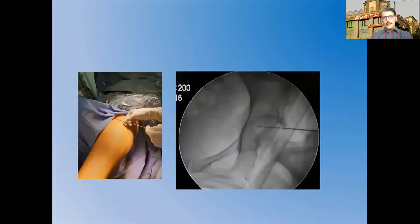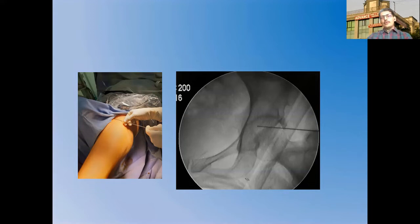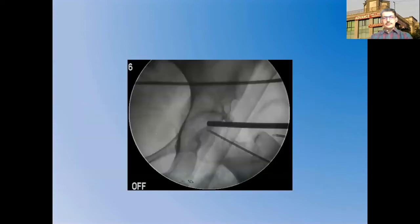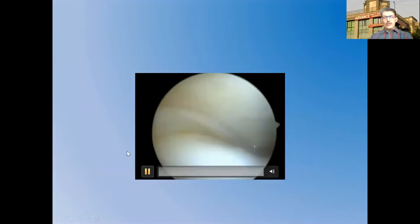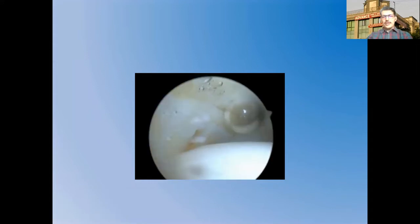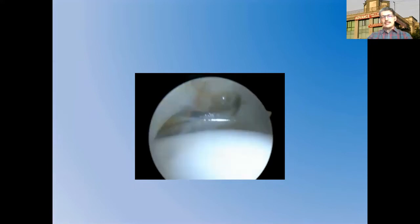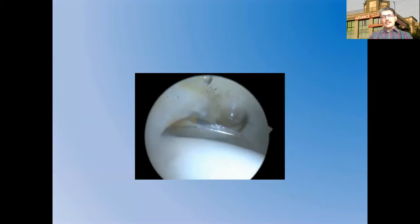Hip arthroscopy was performed in the supine position. The anterolateral portal was made as the first portal. Once the needle was inserted, a finding called an air arthrogram was seen, confirming the needle is inside the joint. The needle position can also be adjusted to ensure it is not penetrating through the labrum. When the air arthrogram is made, injecting saline allows fine adjustment of needle position.